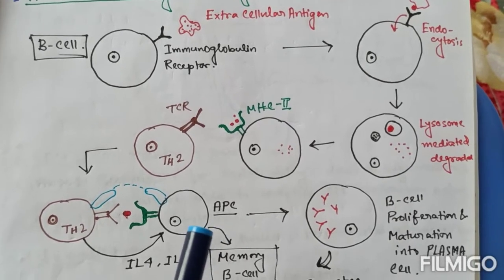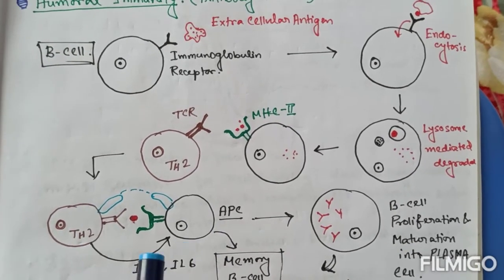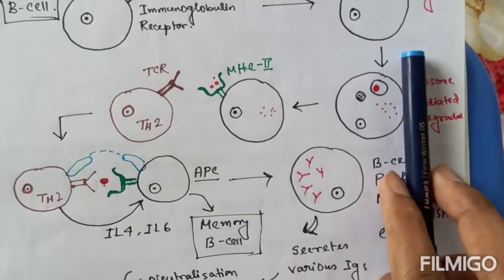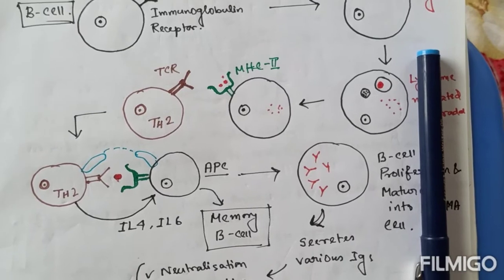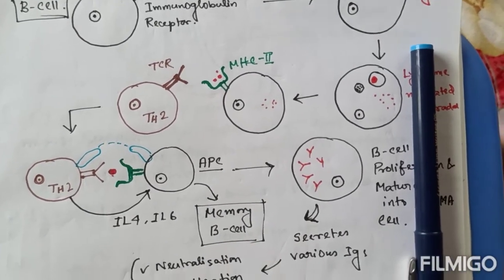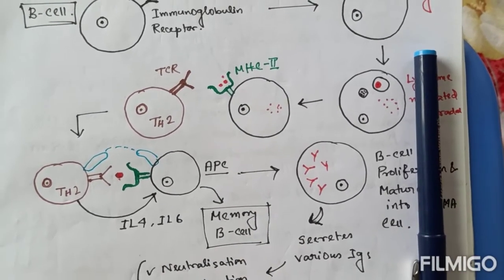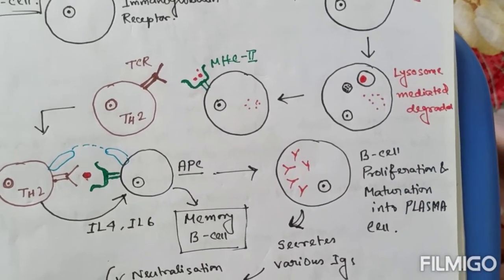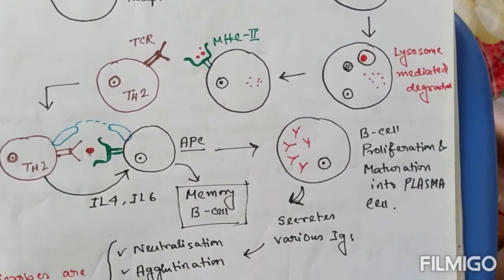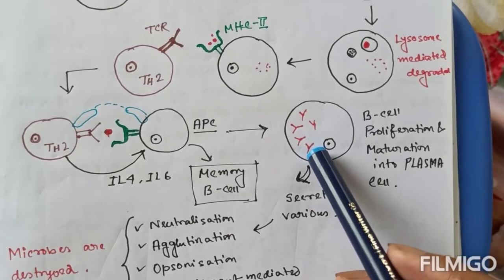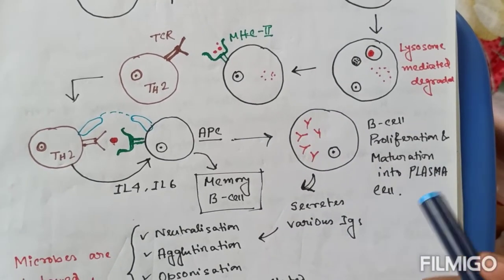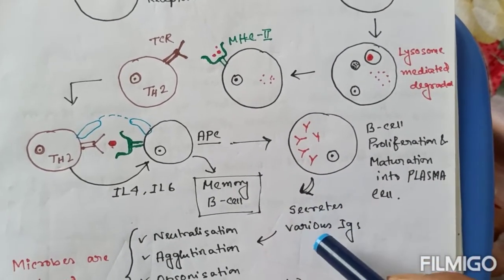They secrete various types of cytokines. And one of these are interleukin IV or VI secreted from helper T-cell to the B-lymphocyte. And these cytokines cause B-lymphocyte proliferation and maturation into plasma cells. And plasma cells is the factory of production of various types of immunoglobulins. And they are secreted into plasma.